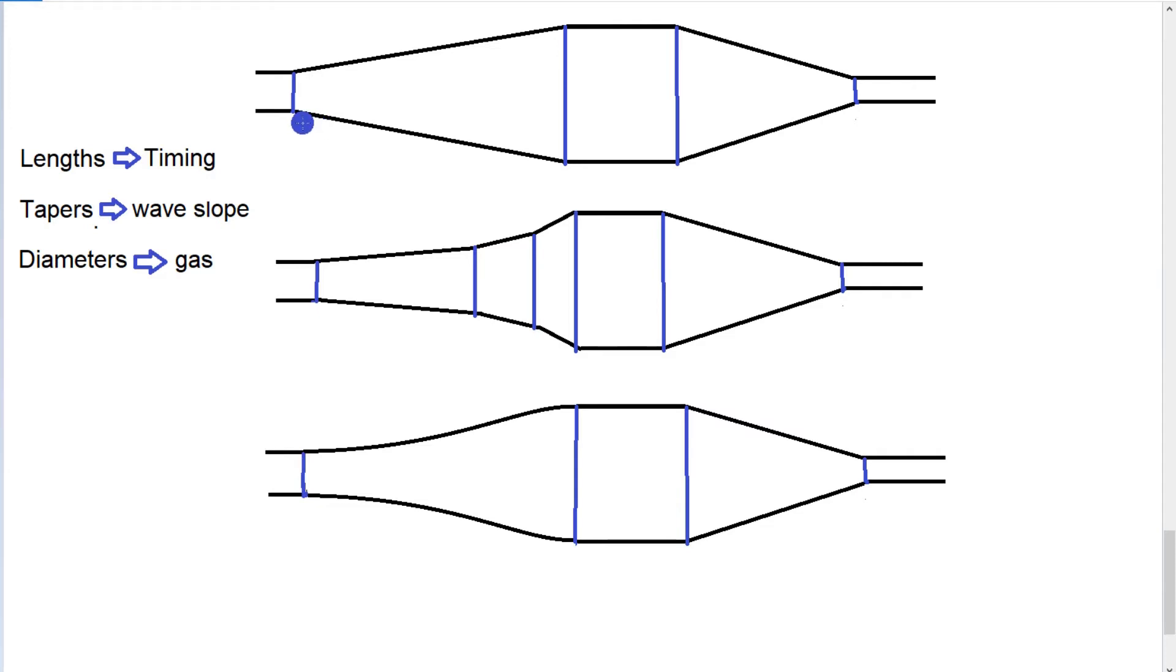Now we need to know what the minimum and maximum RPM of that range will be, and for that we need to know the length of our wave. Now if we know the length of our initial wave that comes out of the exhaust...